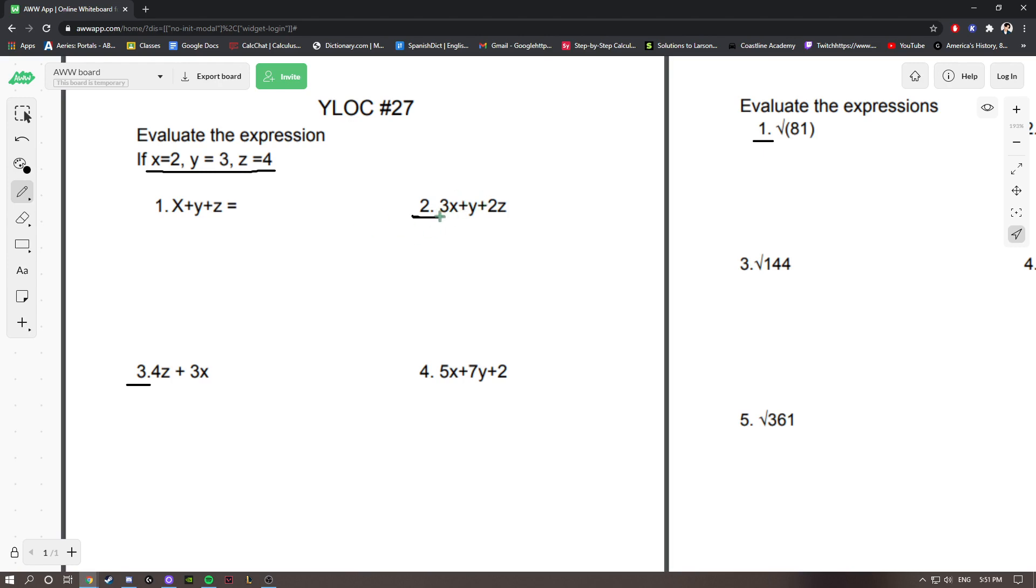For example, if we have 3x plus y plus 2z, we want to do 3 times our value of x, which is 2. So we want to do 3 times 2 plus the value of y, which is 3, plus 2 times the value of z, which is 4. And now when we do this together, we get 6 plus 3 plus 8. That should be 17, if I've done my addition correctly.